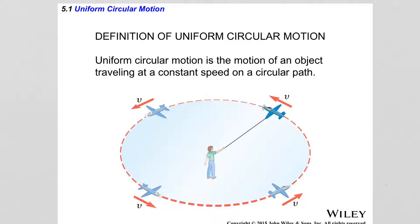What changes is the velocity of the airplane, since the airplane is going around the circular trajectory. The direction of the velocity changes, but the magnitude is constant. In this course, we are only going to consider situations where the circular motion is motion with constant speed. So therefore, there is no tangential acceleration as the object moves along the circular trajectory.